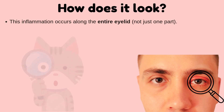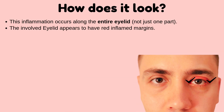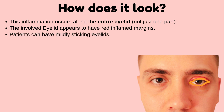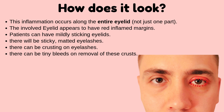On observation, this inflammation occurs along the entire eyelid, not just one part. The involved eyelid appears to have red, inflamed margins. Patients can have mildly sticking eyelids, sticky matted eyelashes, and crusting on the eyelashes. There can also be tiny bleeds on removal of these crusts.